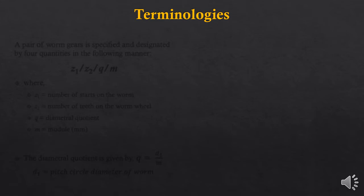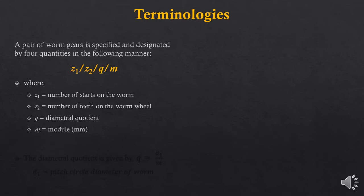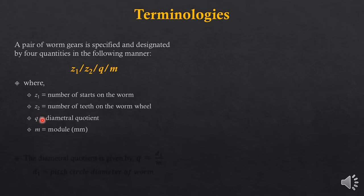Now let's look at the terminologies involved in worm gears. A worm gear is typically designated using four parameters: z1, z2, q, and m. z1 is the number of starts on the worm — remember this, because in other gear designs z1 means the number of teeth on the pinion, whereas here for the worm z1 is the number of starts, which could be single start or multi-start. z2 is the number of teeth on the worm wheel.